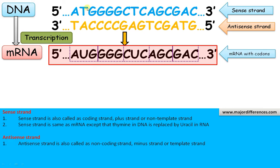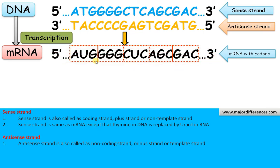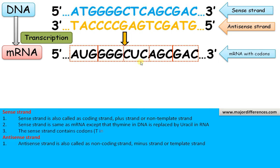Now look at the sense strand and the mRNA with codons. You can see by comparing these two, both are exactly the same. In the case of mRNA, thymine is replaced by uracil — rest is the same: GGG, CUC, and so on. Everything is exactly the same except that thymine is replaced by uracil in the mRNA molecule.